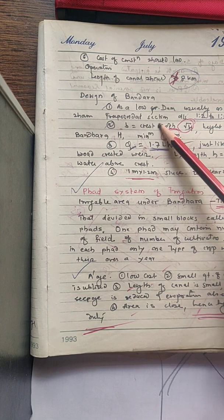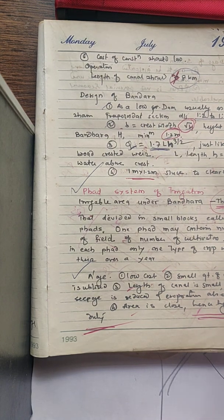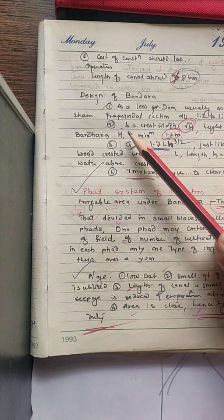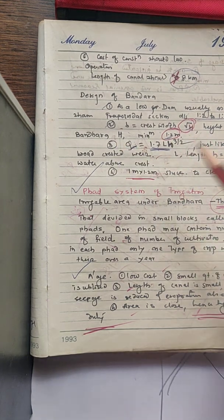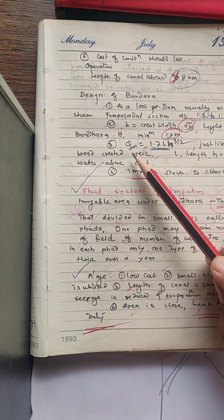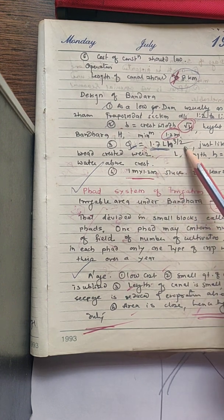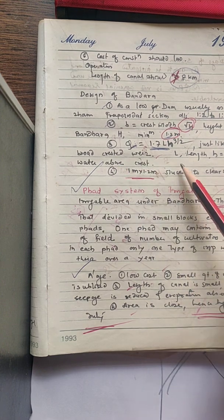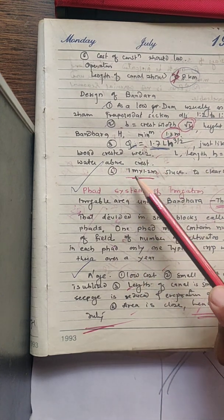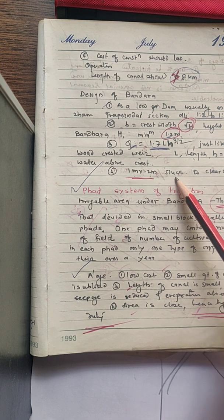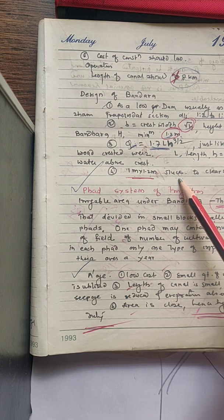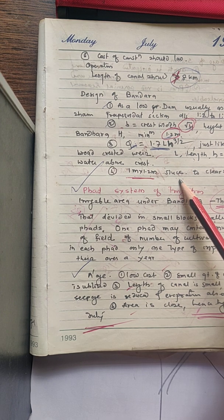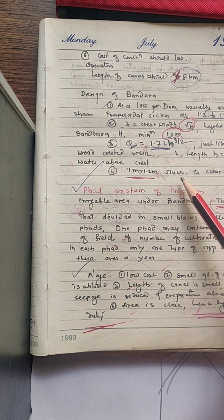Normally, bandaras have a trapezoidal cross-section with a downstream slope of 1:2 to 1:5. The crest width B equals root H, where H is the height of the bandara, with a minimum height of 1.2 meters. Discharge over the bandara is 1.7 × L × S^(3/2), where L is the length and S is the height above the crest — just like a broad-crested weir. Sluices of 1 by 1.2 meters are provided for desilting, and hence the life of the bandara can be increased.